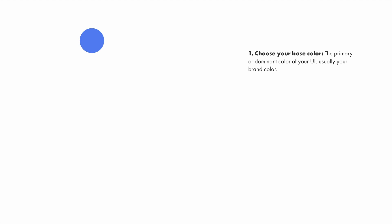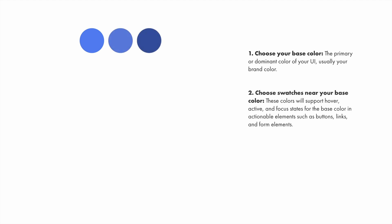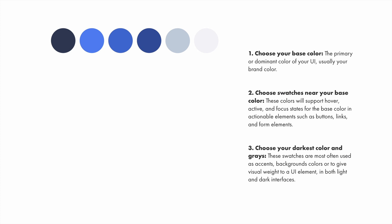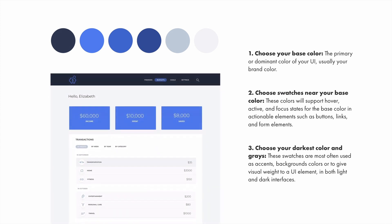Choose your base color first — the primary or dominant color of your UI, usually your brand color. Next, choose the swatches near your base color, changing only the saturation or brightness while leaving the hue alone. Finally, choose your darkest color and a range of grays by dragging the saturation over to the gray side of the color slider. With one single hue — blue — we can design an entire interface.